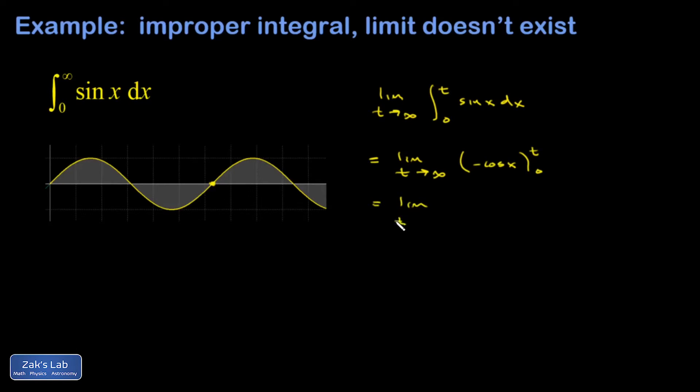And that gives me the limit as t goes to infinity, negative cosine of t plus cosine of zero. And I could clean it up a little bit maybe.